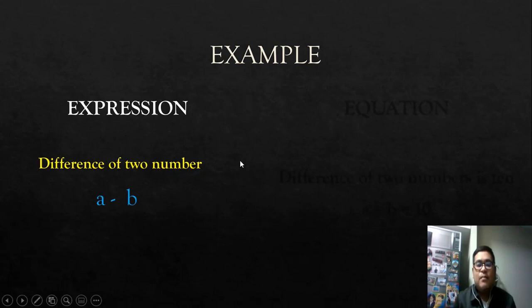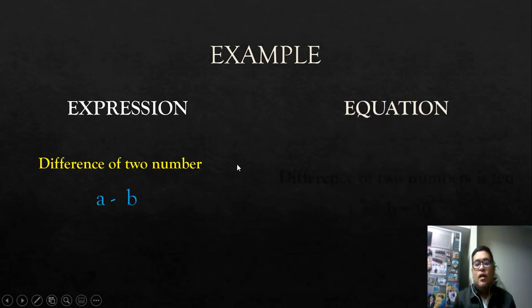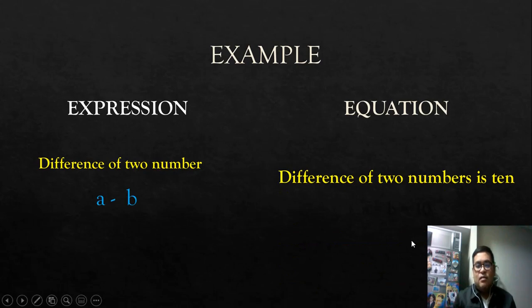For the example of an equation, difference of two numbers is 10. If you're going back to our past lesson, is means equals. So difference of two numbers is 10 means the difference of two numbers is equal to 10. If we're going to translate that into mathematical symbol, we have a minus b equals 10. See the difference.